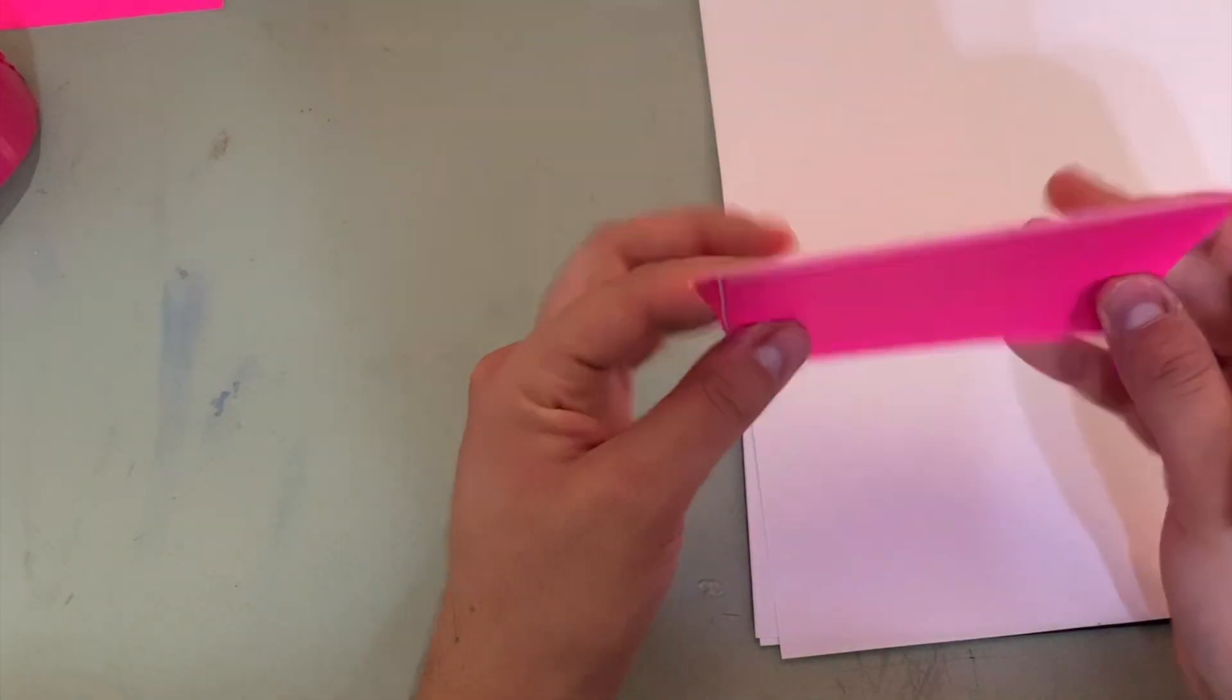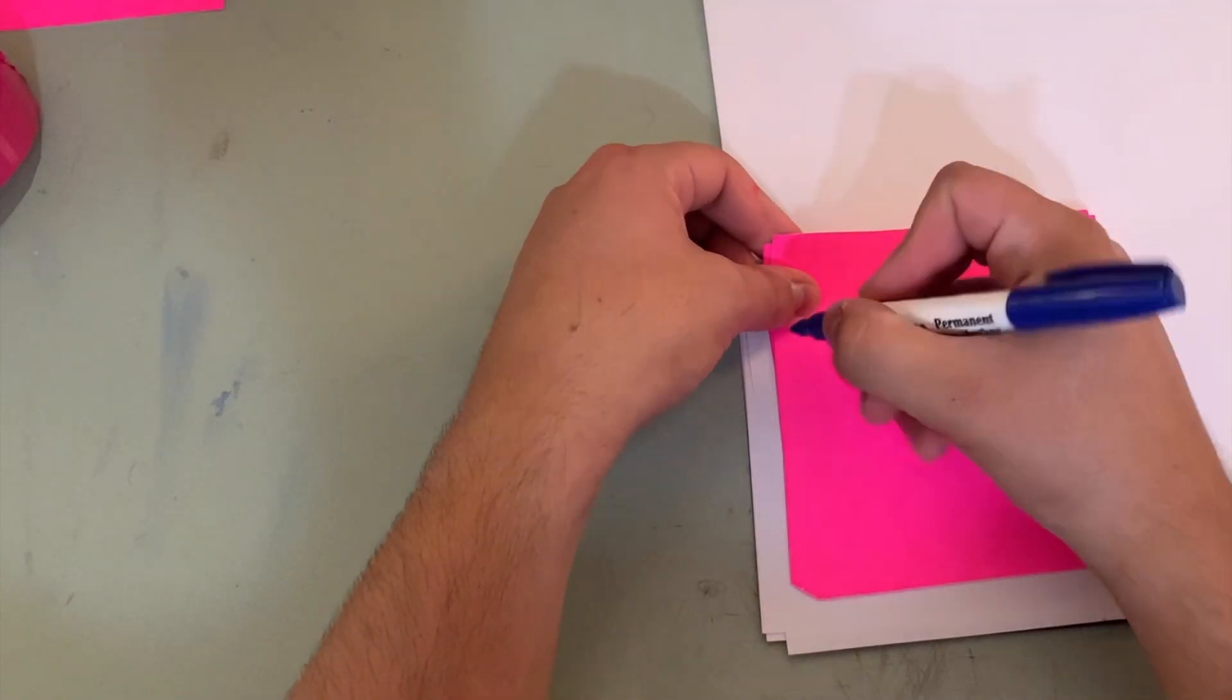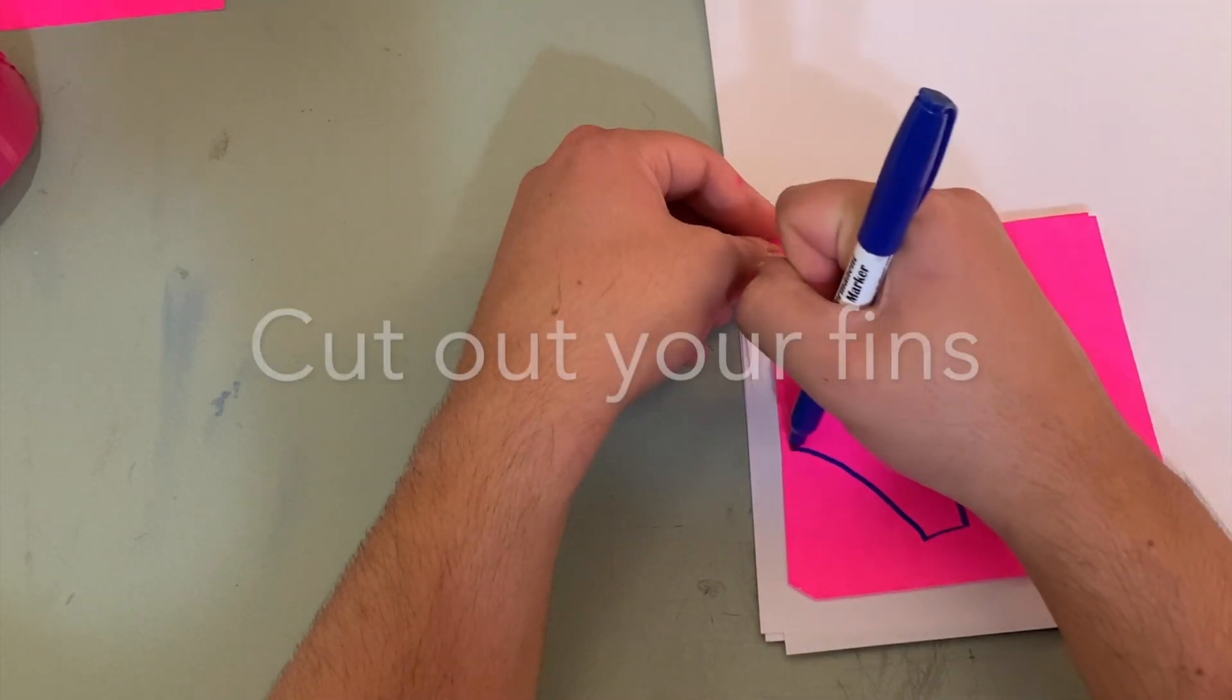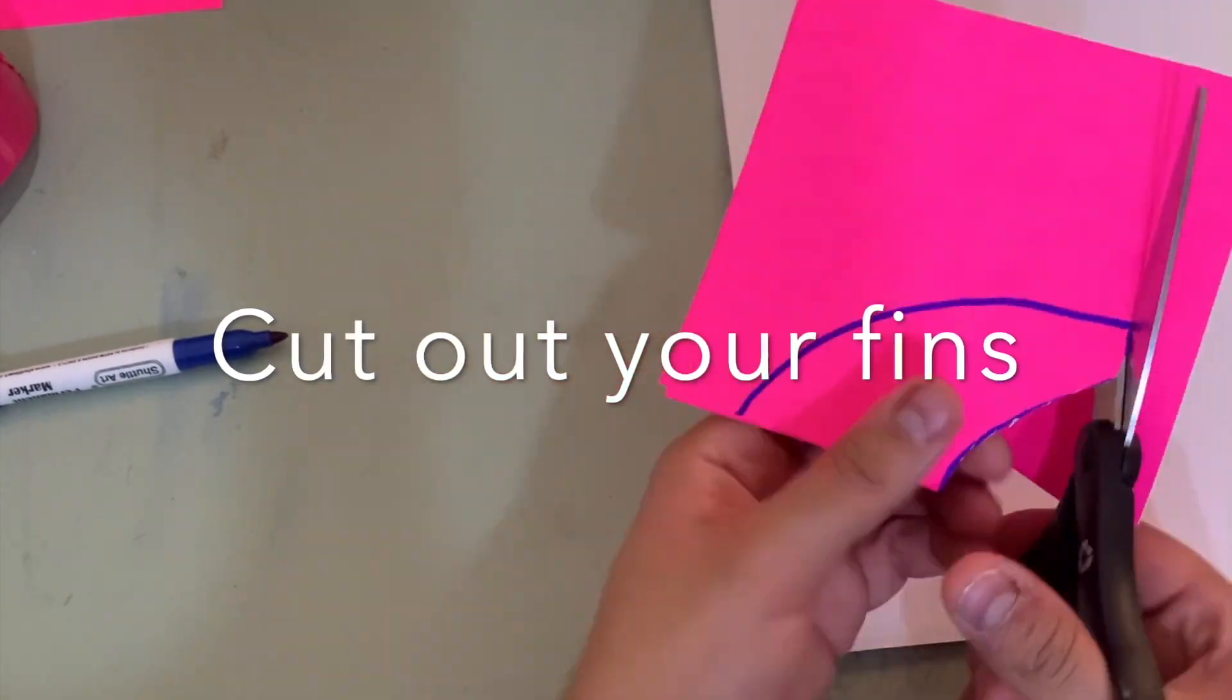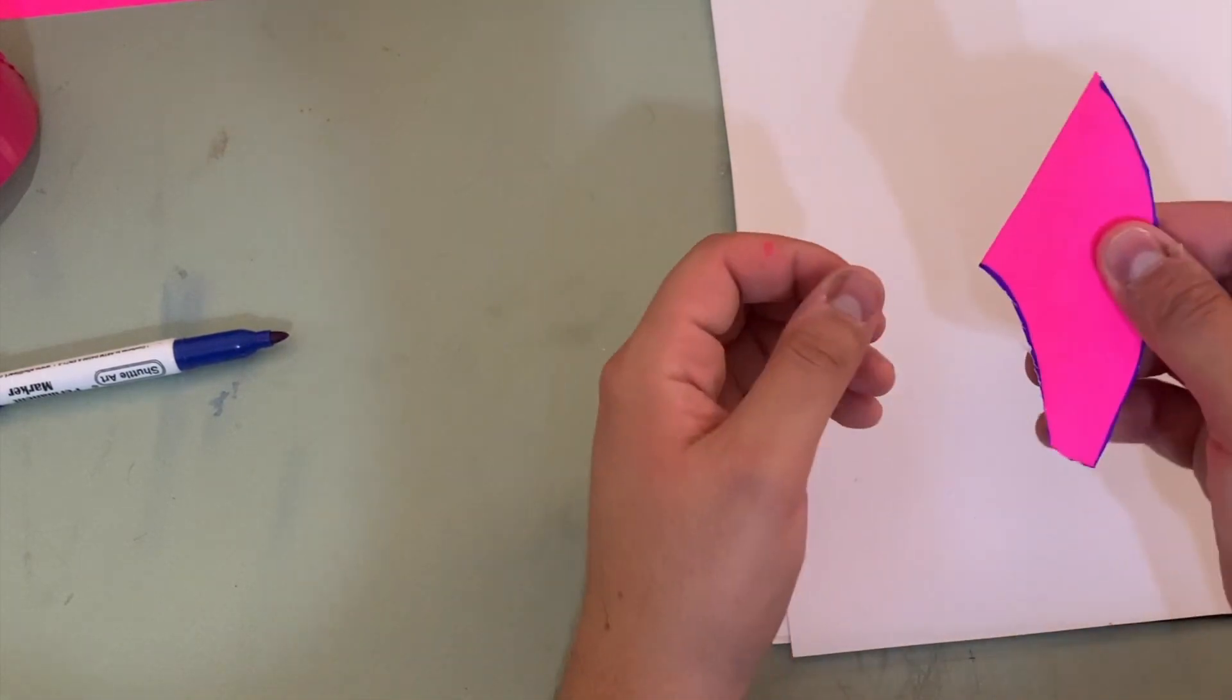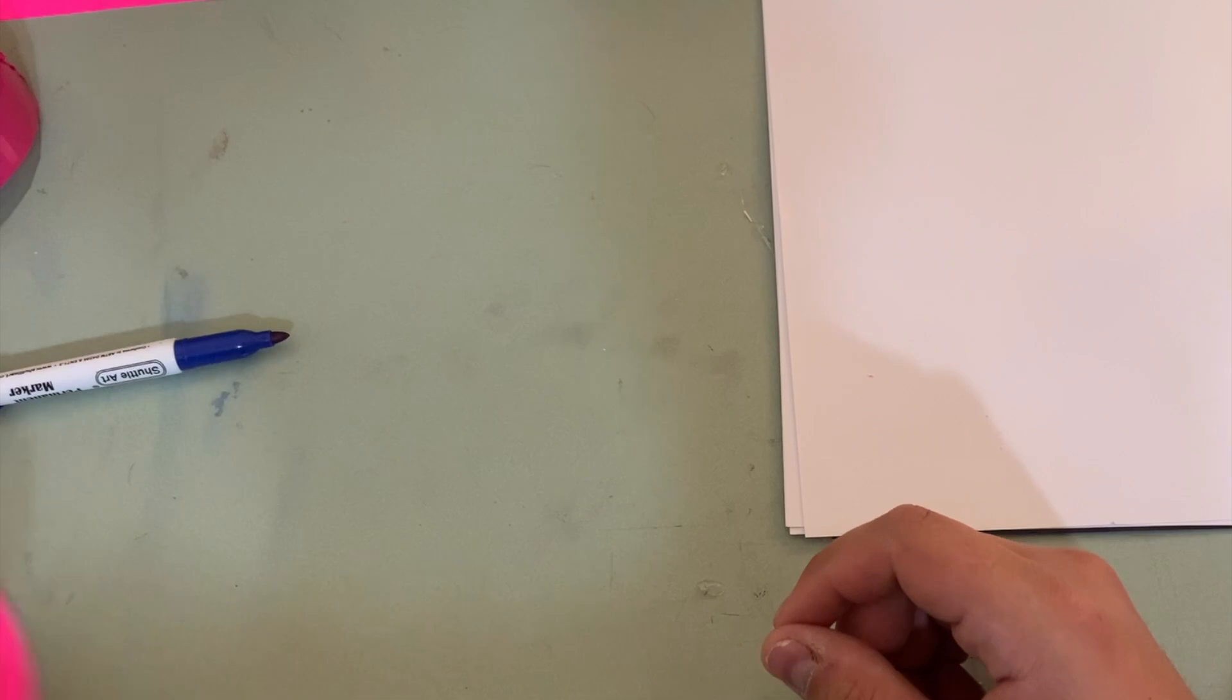So take some cardstock that we got in the classroom, go ahead and draw some fins. I'm going to make mine look like this, but whatever shape you want is up to you. Alright, we got our three fins. After we've got our three fins, step one is going to be put them aside.